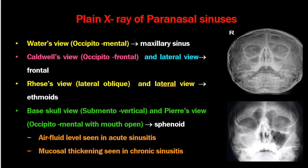On X-ray PNS, the occipitomental (OM) view is done for maxillary sinus — showing air-fluid level in acute sinusitis. Caldwell view (occipitofrontal) and lateral views are done for frontal sinus. Rhees view, lateral oblique, and lateral views are done for ethmoid sinuses. The submentovertex and perorbital views are also available. In chronic sinusitis, mucosal thickening is seen on X-ray rather than air-fluid level.